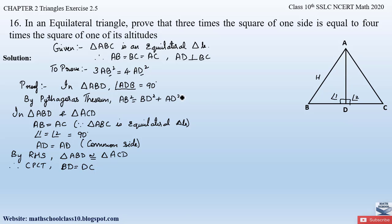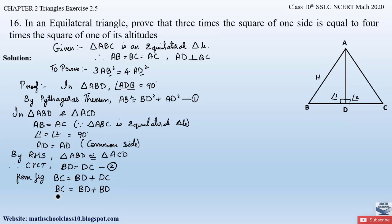Since the two triangles are congruent, corresponding sides are equal. Therefore BD = DC. Let this be equation 1. From the figure, BC = BD + DC. Substituting DC = BD, we get BC = BD + BD = 2BD. Therefore BD = BC/2. Let this be equation 3.